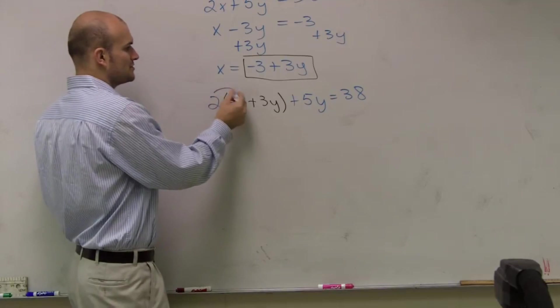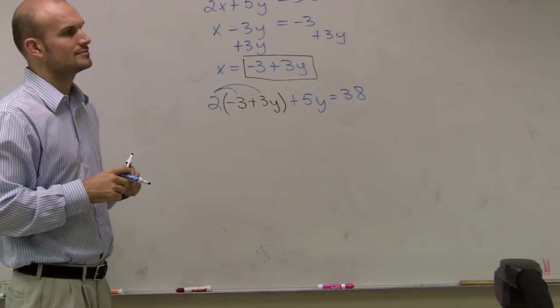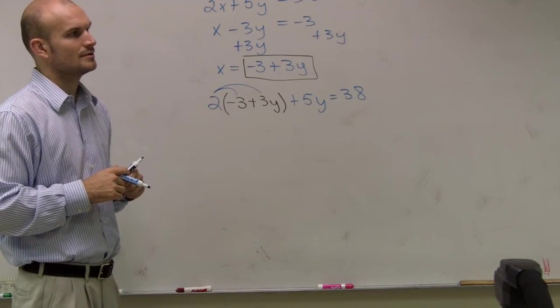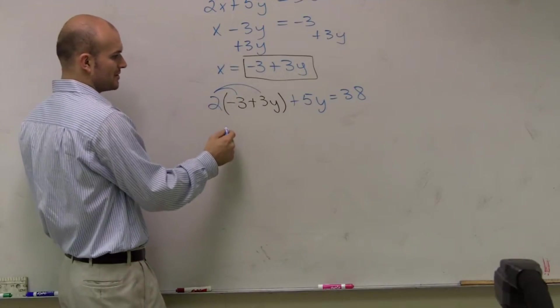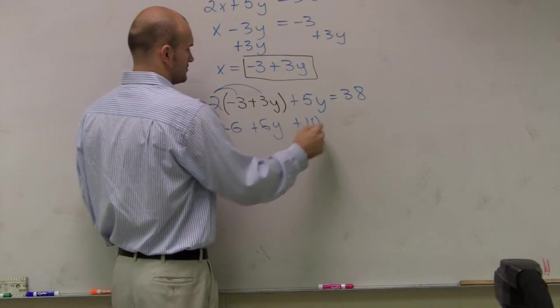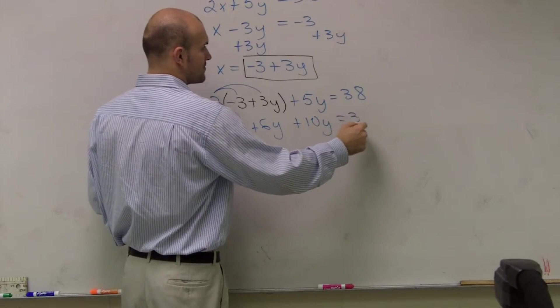Now I have to use distributive property. Therefore, then I distribute, I have negative 6 plus 6y plus 10y equals 38.